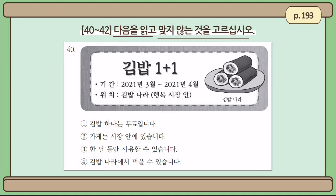Number 40. 김밥 1 더하기 1 — 김밥 1 plus 1. Seems like this is a coupon to give you a free roll of 김밥 when you order one. I think this is the name of the restaurant, and then 행복시장 안 — inside the 행복 market.